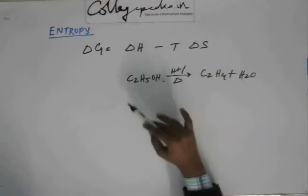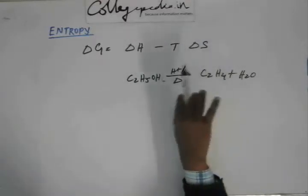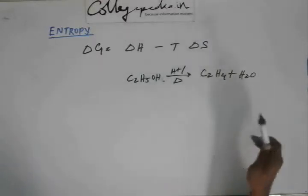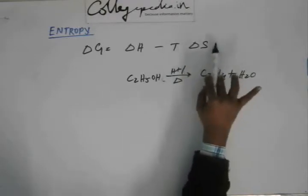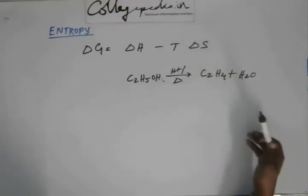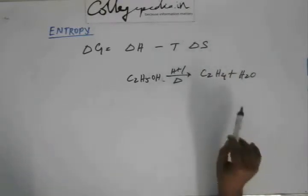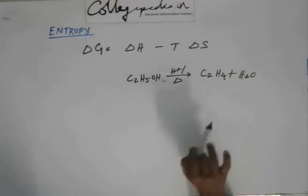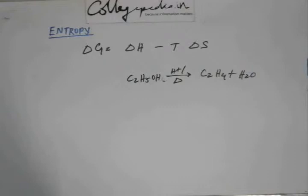Suppose we are dealing with this reaction and I have to find out whether this reaction is spontaneous or not. So what I would do is: I will calculate delta H for this reaction experimentally, I will calculate delta S experimentally, I will know the temperature of the reaction, and I will calculate delta G to find out if delta G is negative or not.